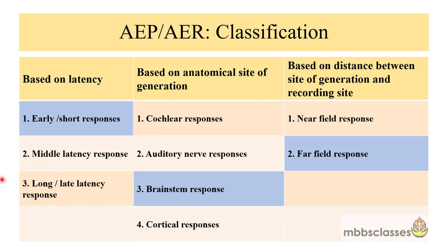The third type of response from the brain following an auditory stimulus can be a long latency response that occurs beyond 50 to 80 milliseconds. When these auditory evoked potentials are classified on the basis of anatomical site of generation, they are divided into four groups.